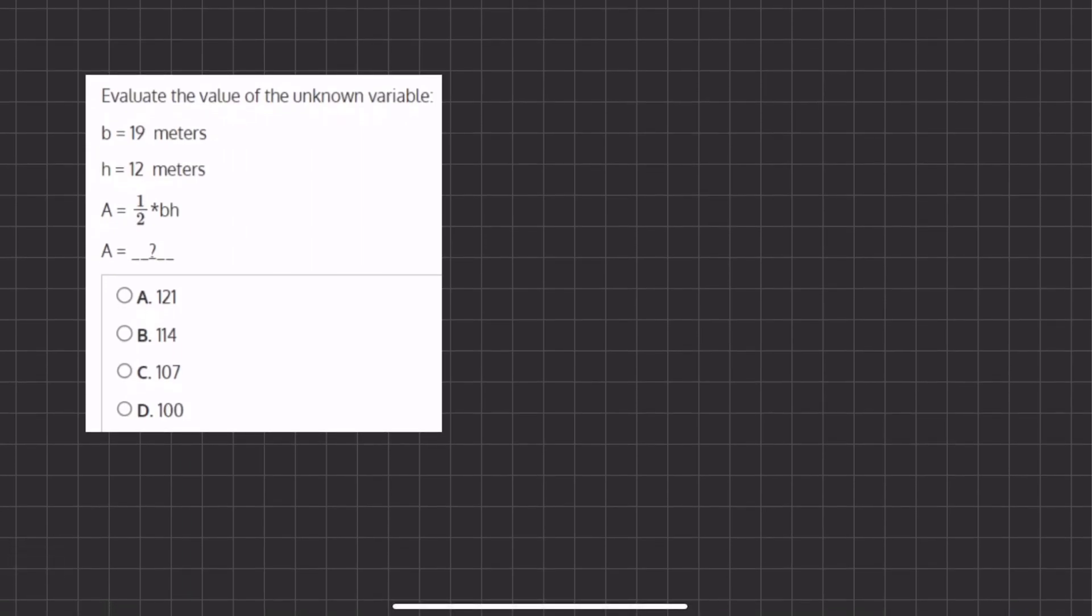All right, so in this problem we want to find the value of our unknown variable, and in this case it's going to be A. Now we're given an expression for A and we are also given the values of the variables b and h. So let's plug those into the expression for A and solve.